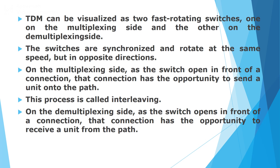Similarly, across the demultiplexer side, the switch opens in front of a connection and that respective connection has the opportunity to receive the unit of data from the path. So this is how two fast rotating switches across the multiplexer and demultiplexer sides work, and this process is called the interleaving concept.